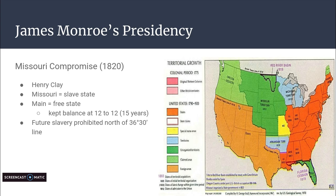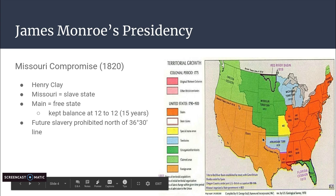The Missouri Compromise also established the latitude line of 36°30'. All new states north of that line were to be free states, and all new states below the line would be slave states. This compromise lasted 15 years until an imbalance was found when new states started to enter as people moved west. Until then, it kept peace between the two regions.